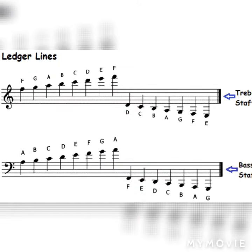If you ever wonder how to read music over the staff, check out the notes above the staff for treble clef. G to A goes from no ledger line to ledger line with the note in the middle. Then A to B goes from middle to under, C goes middle to under, and D is under-under. Ledger lines over the staff follow a pattern: middle, under, middle, under.